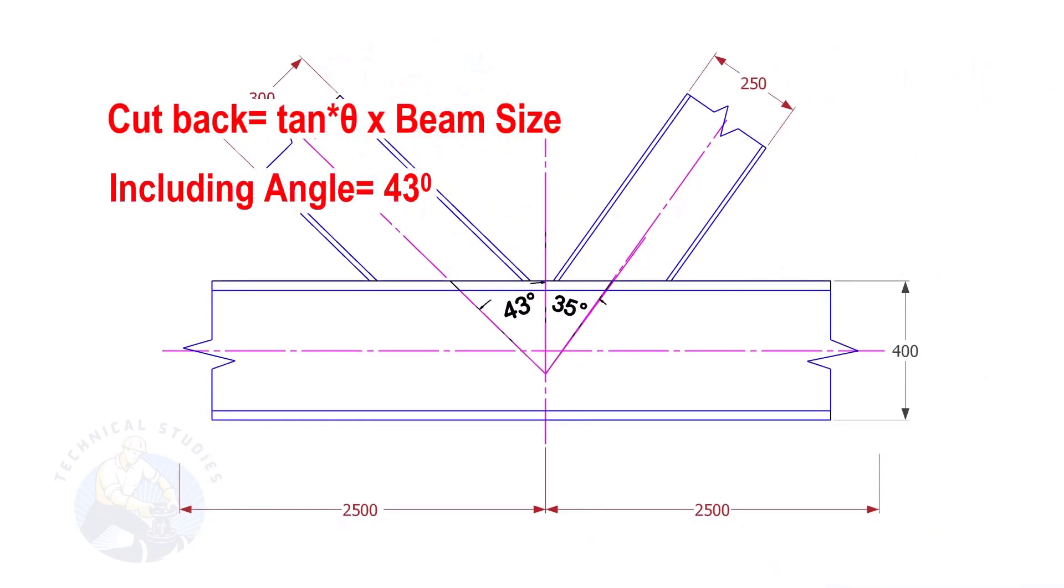If the including angle is 43 degree, and the size of the beam is 300, the cutback is tan 43 into 300.